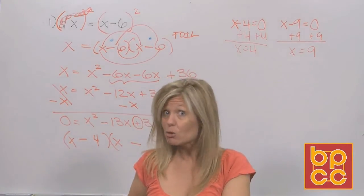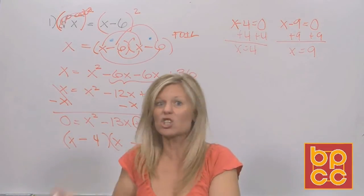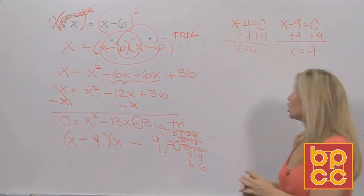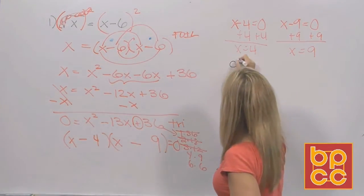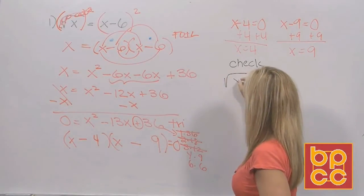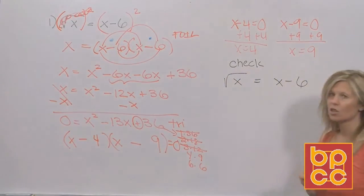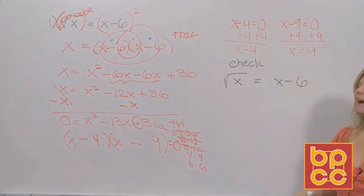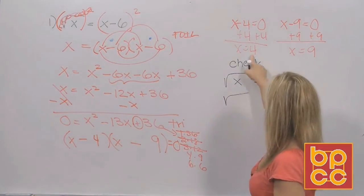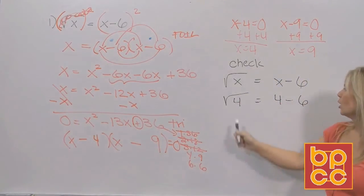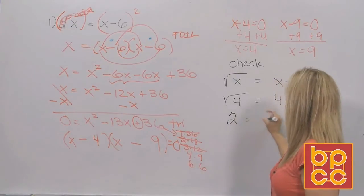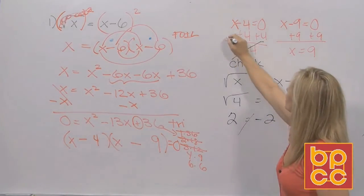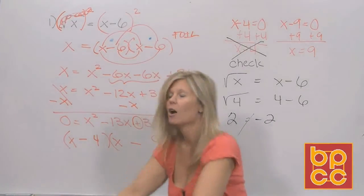When you're solving a radical equation, when you're done solving you're really not done — you always must check. How do you check? You go back to the original equation, one value at a time. Check x equals 4: square root of 4 equals 4 minus 6. The square root of 4 is 2, and 4 minus 6 is negative 2. Does 2 equal negative 2? No — so 4 is your extraneous answer. It's useless; throw it in the garbage.